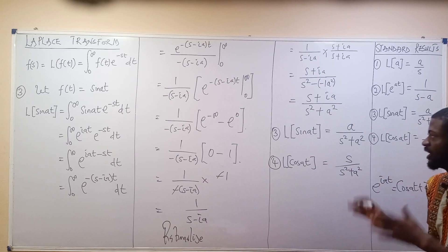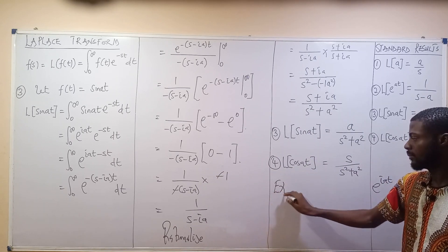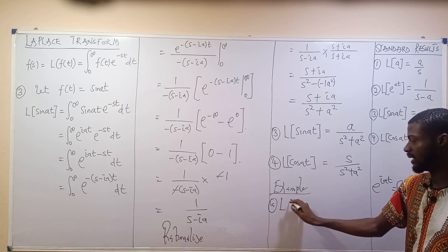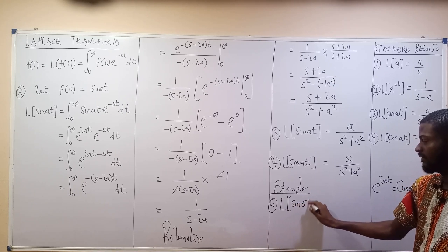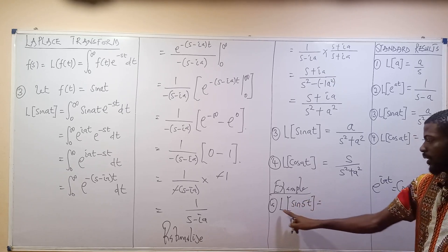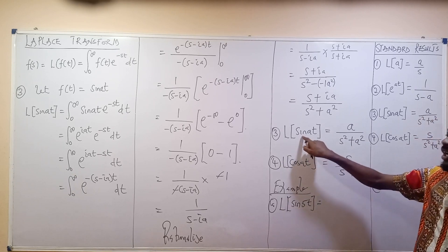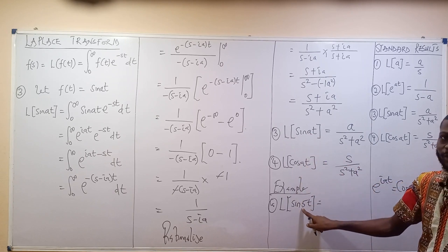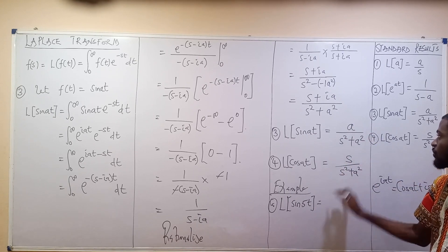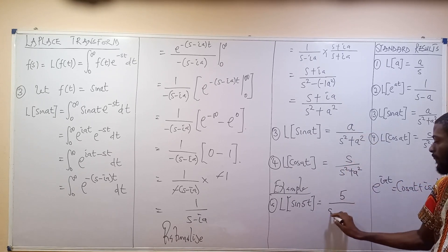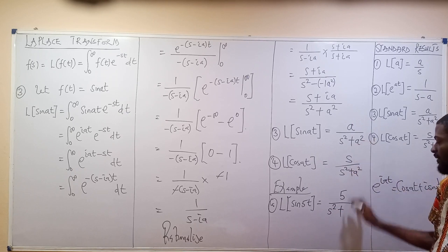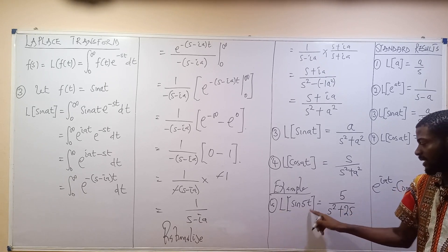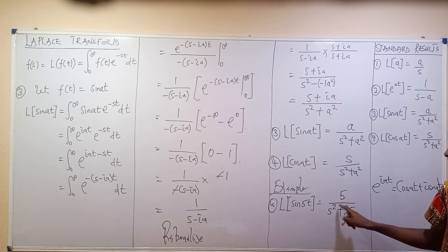Let's apply these results. If you're asked to evaluate the Laplace transform of sine 5t, compare with sine at — your A is 5. So anywhere you see A, put 5. This becomes 5 over S squared plus 5 squared, which is 5 over S squared plus 25.